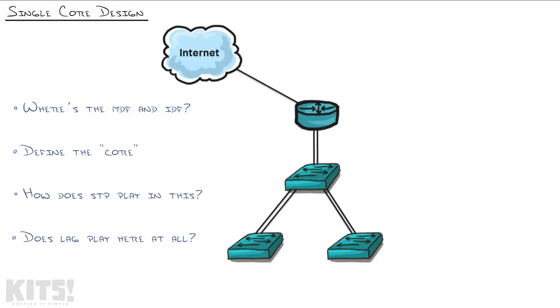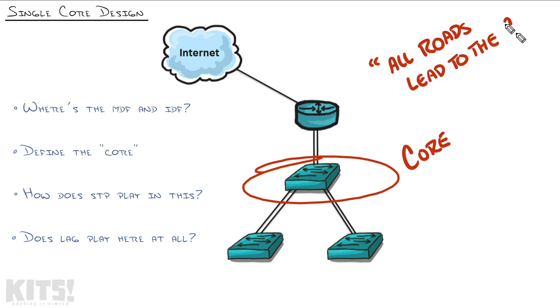The first intentional design for switch port connections is known as a single core design. This is where you elect one switch to be considered your core, and all the other switches connect there. It's like the old saying, all roads lead to Rome. In this case, all of our roads lead back to the core.